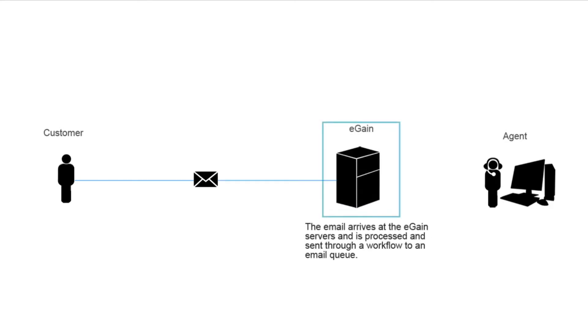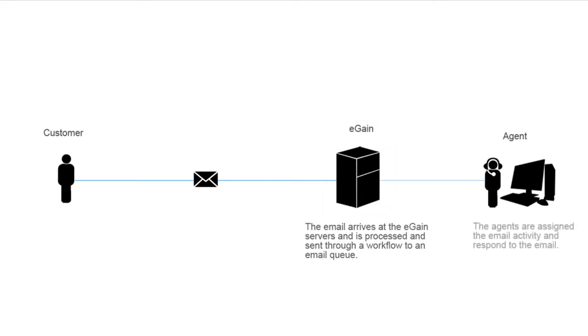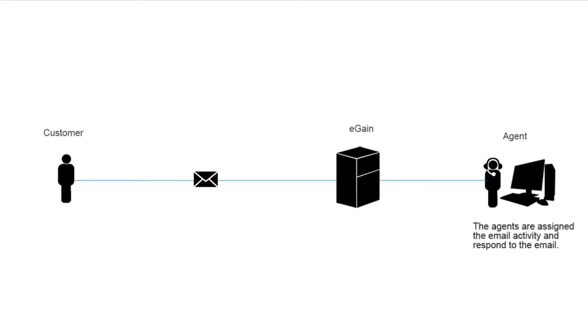Here it is filtered and processed by the system, sent through a workflow to a queue. The agents are then able to pull from the queue or be assigned the email activity and respond.